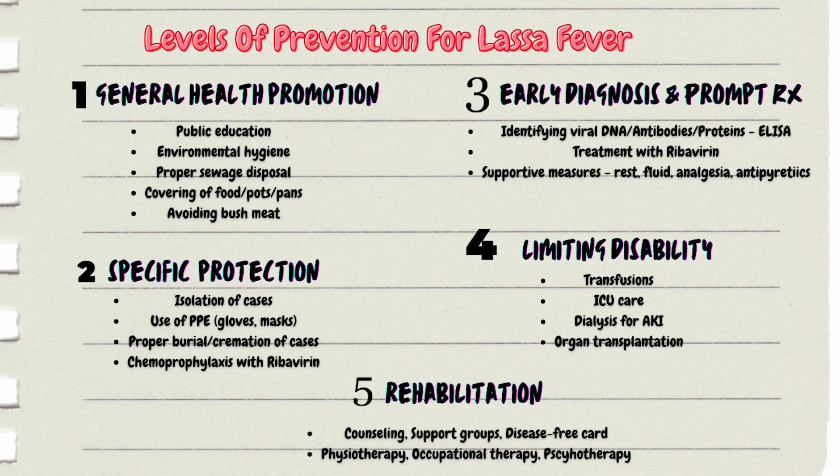For level five, rehabilitation after Lassa fever, we include counseling, support groups, and disease-free cards — which allow recovered patients to move and travel freely. We also include physiotherapy, occupational therapy, and in some cases psychotherapy, because the experience can be traumatic.